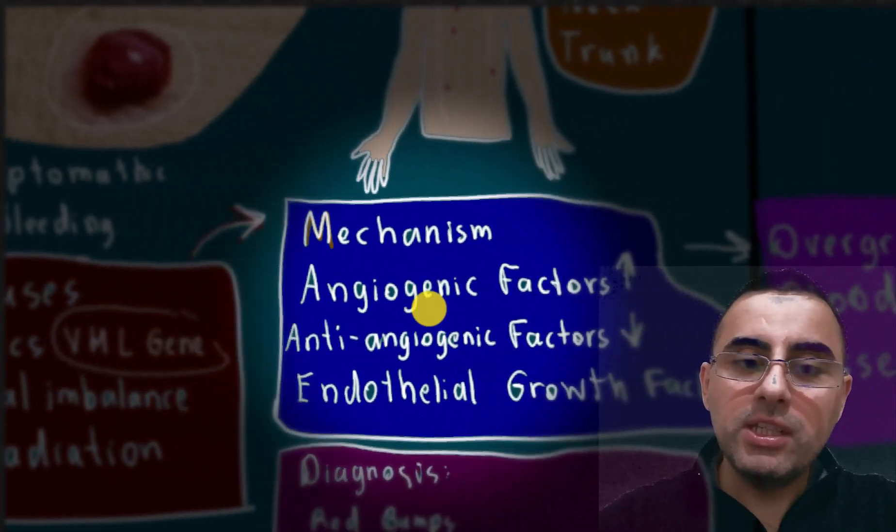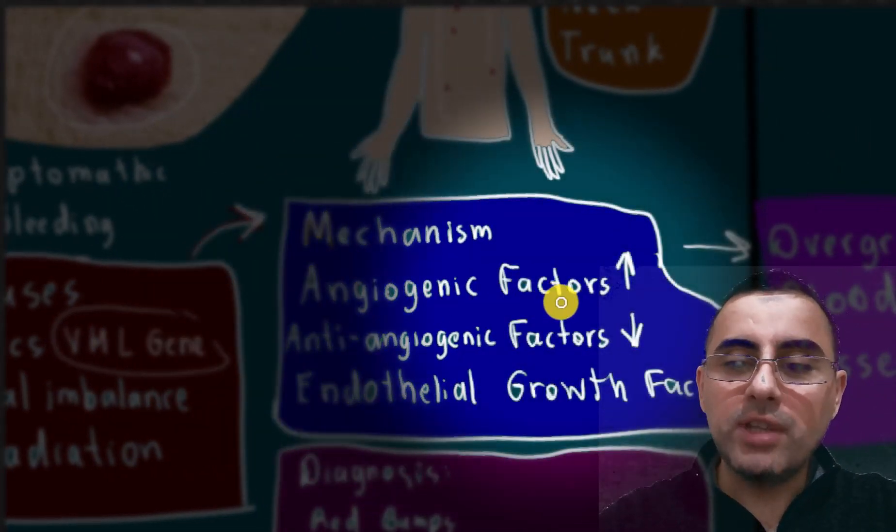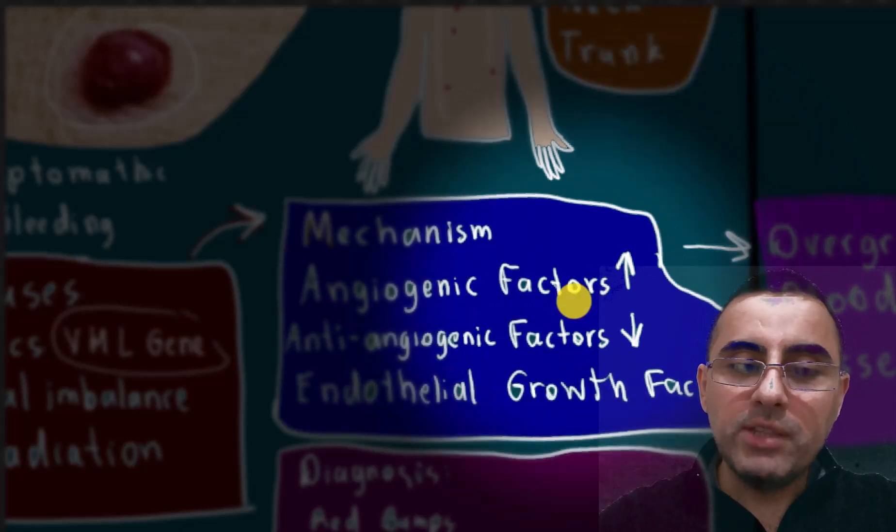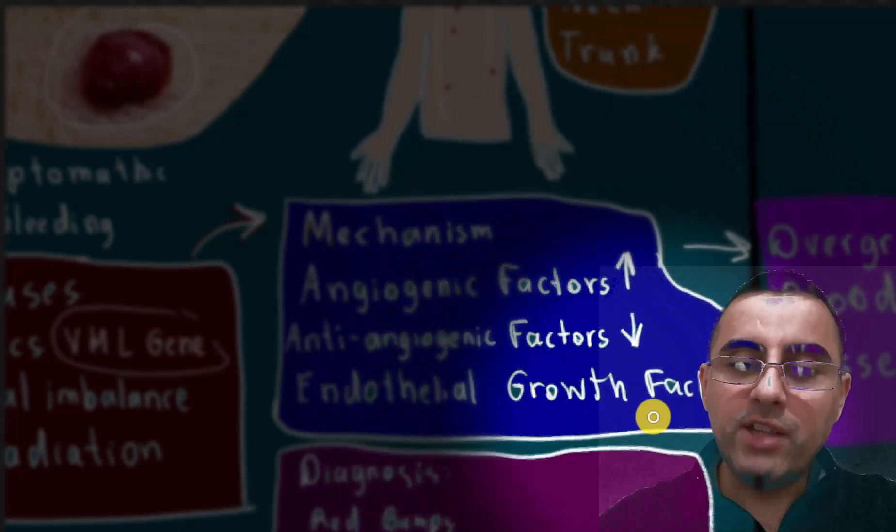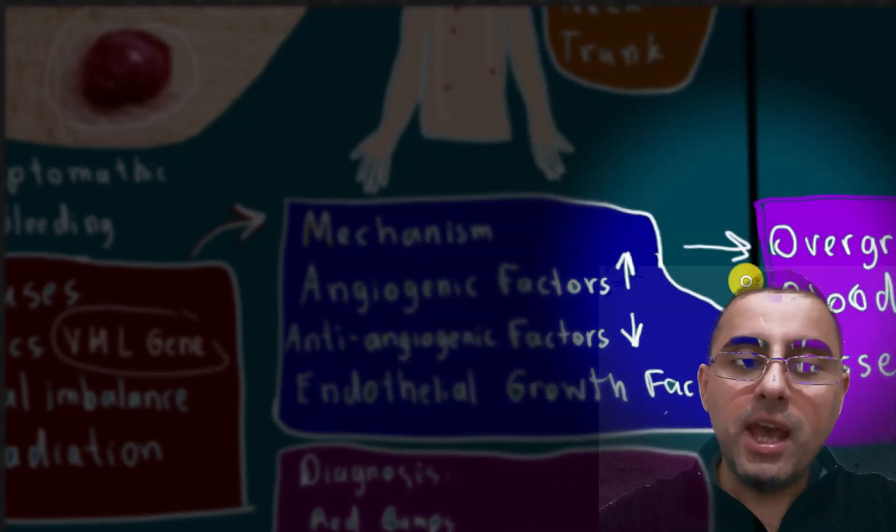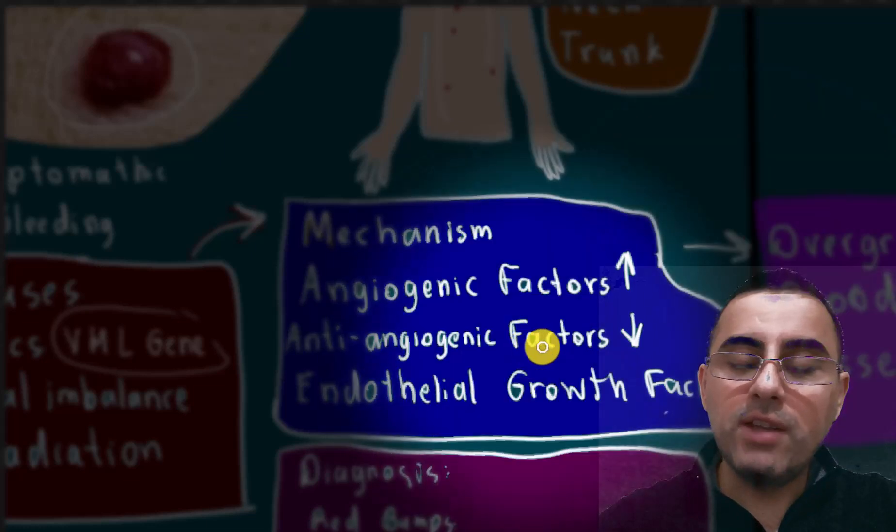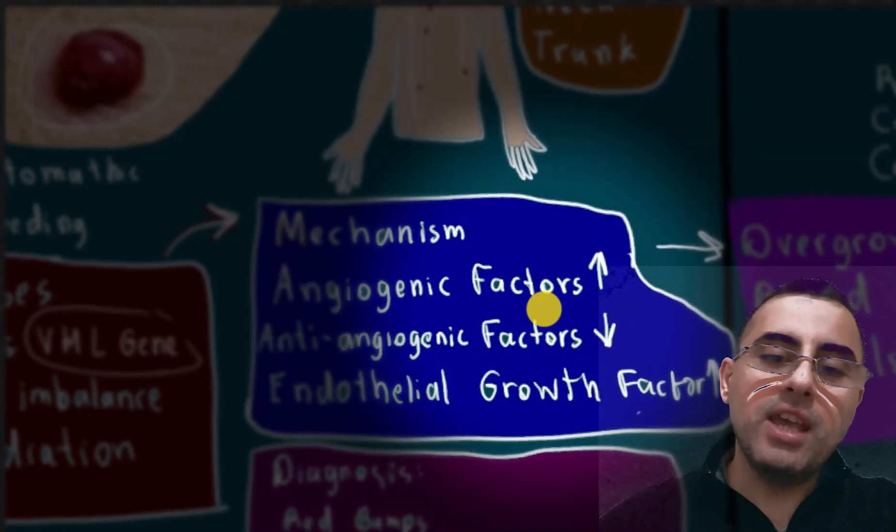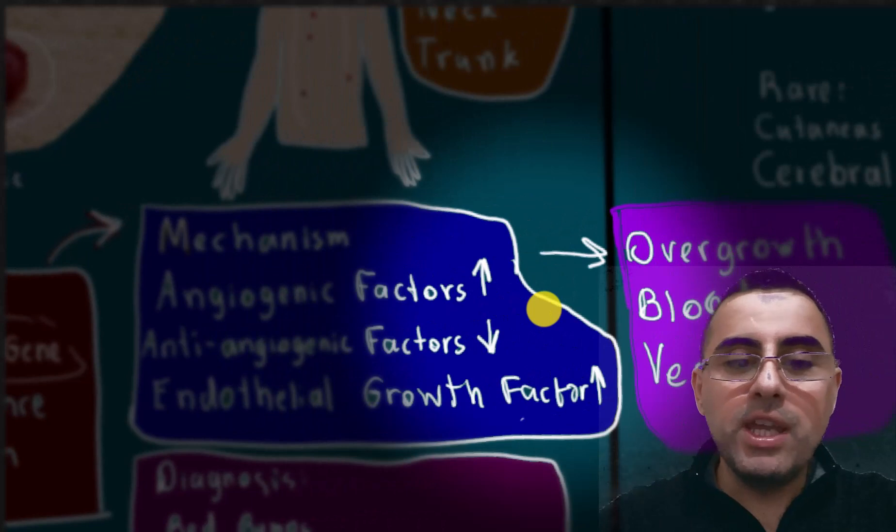The mechanism of action involves angiogenic factors being increased, for example, endothelial growth factor, and anti-angiogenic factors being decreased. This imbalance of angiogenic factors and anti-angiogenic factors causes overgrowth of blood vessels and we get angioma.